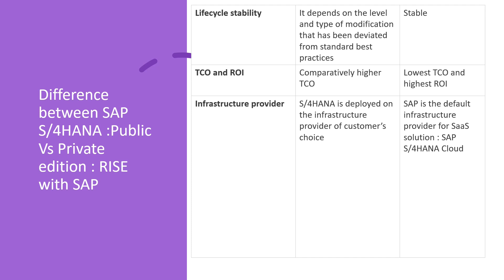Regarding infrastructure provider: in private edition, S/4HANA is deployed on any infrastructure provider depending on the customer's choice — they can use any cloud provider or cloud services to deploy S/4HANA. In public edition, SAP is the default infrastructure provider for Software as a Service solutions like SAP S/4HANA Cloud.